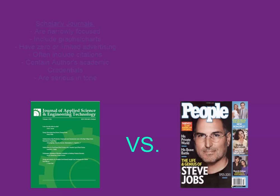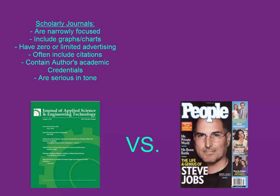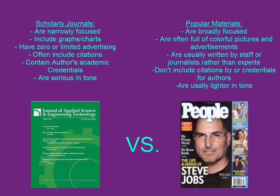Your main thing you'd be looking for here are journal articles. A lot of people get confused as to what a journal article is versus a magazine. Scholarly journals have a narrow focus — they're very specific. They have things like graphs and charts because they're presenting information. They don't have a lot of advertising, they include citations, they contain credentials, their authors are experts, and they're serious — they're presenting research.